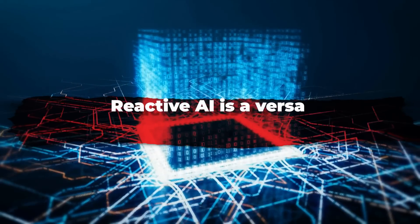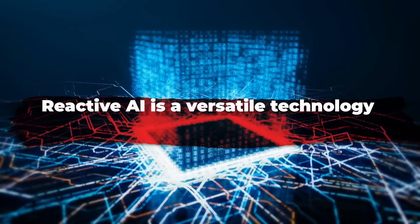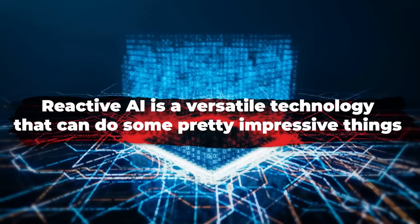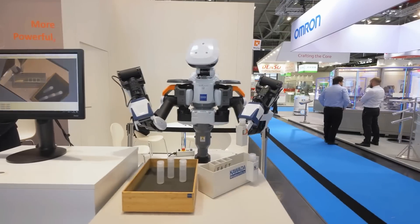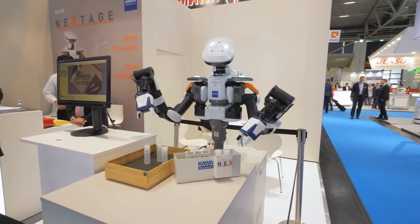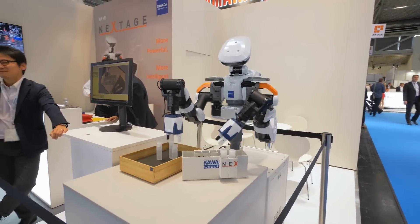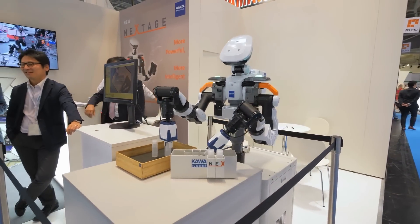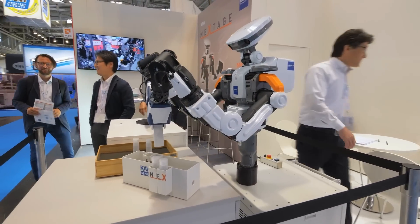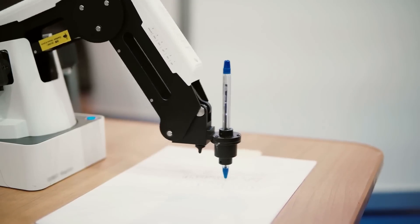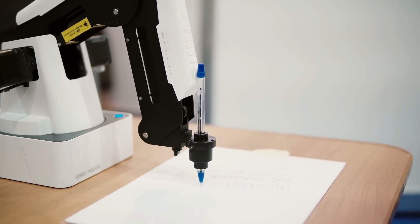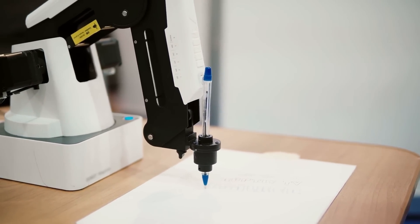Reactive AI is a versatile technology that can do some pretty impressive things. Take, for example, a robotic arm that can grasp objects of different shapes and sizes through trial and error — that's reactive AI at work, learning and improving its performance without any explicit instructions or training data.